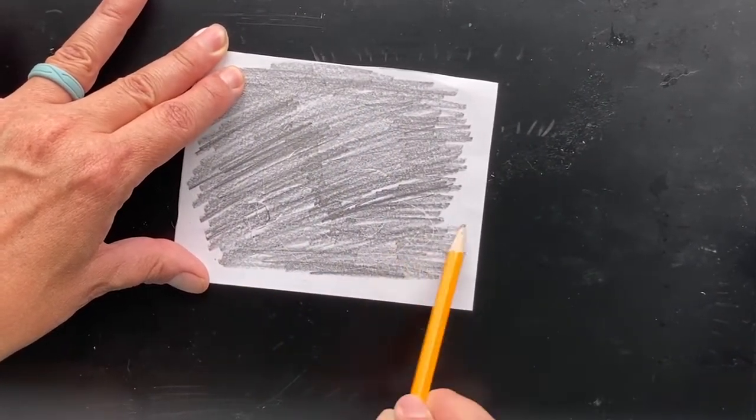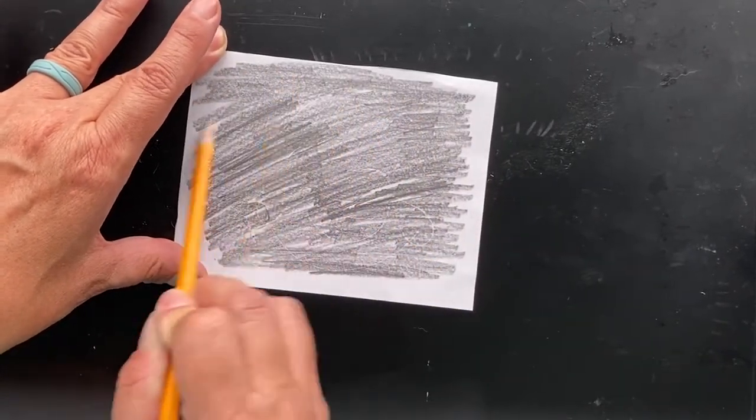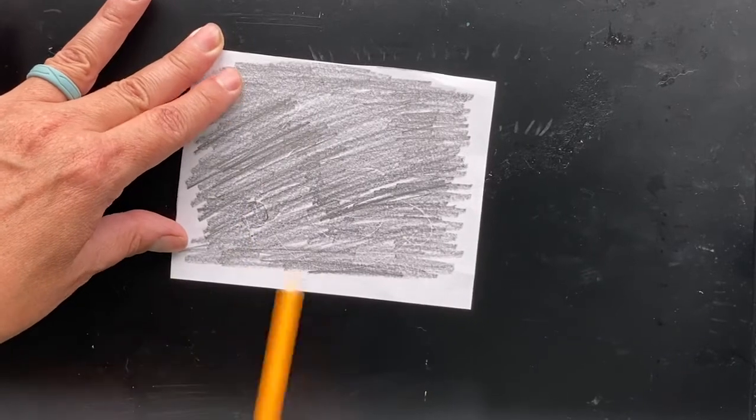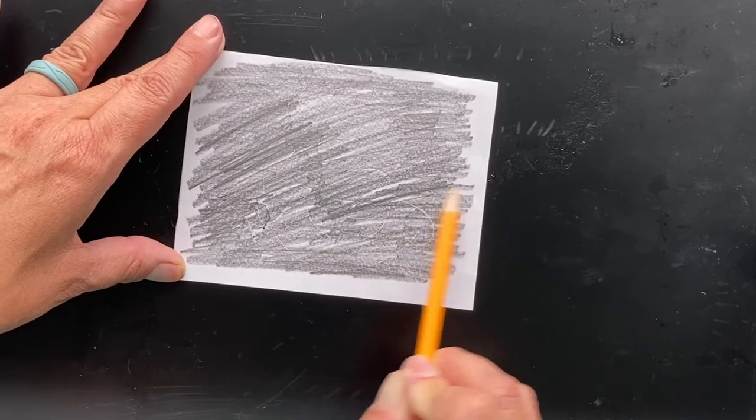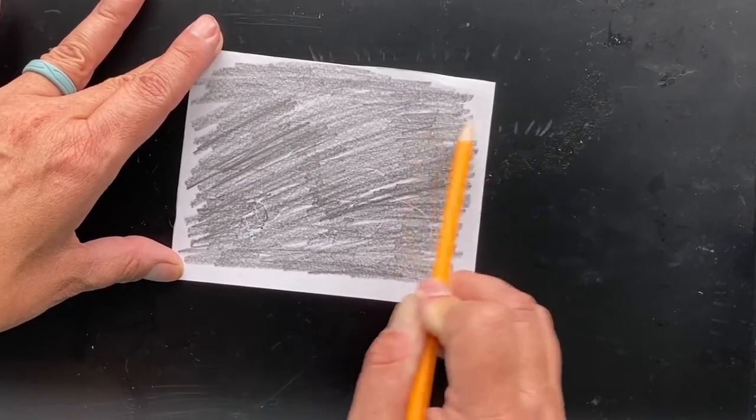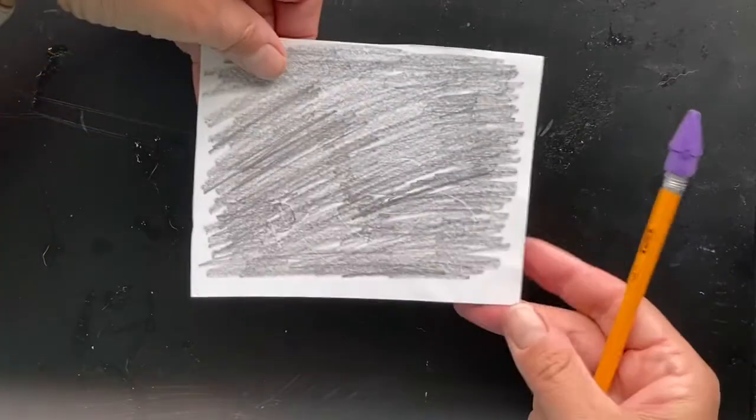And you just want to go ahead and color that in, press real hard so you get lots and lots of the graphite from your pencil onto the back of your paper. So it should look like that, but then when you flip it over there is your drawing.